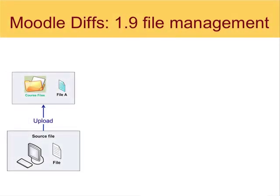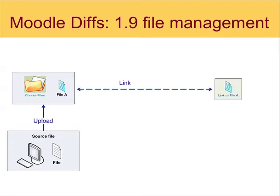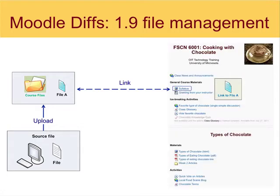If you'll recall in version 1.9, let me lay out the way that we would get a file so that a user could download it or view it. First, we would create that file on our hard drives, and second, we would upload it to the Moodle server into an area known as files in version 1.9, and known as course files in version 2. Next, we would make a link to that file on a section somewhere. In this example, we have the syllabus, we've uploaded it to course files, and we are linking to it in the top section.